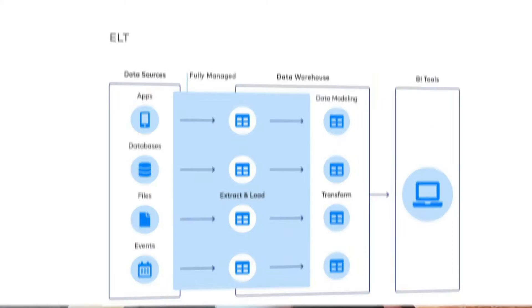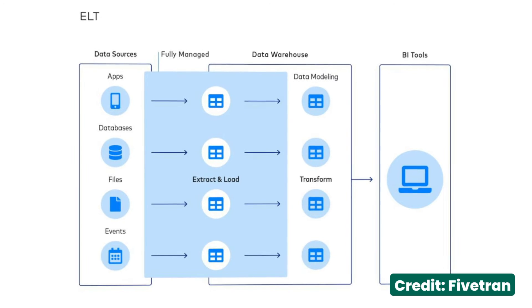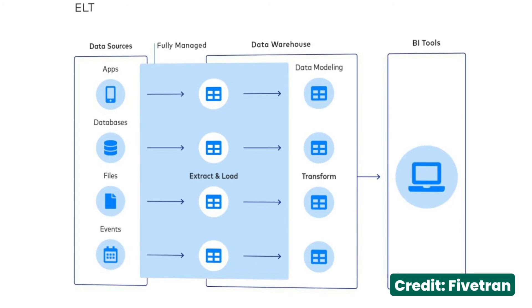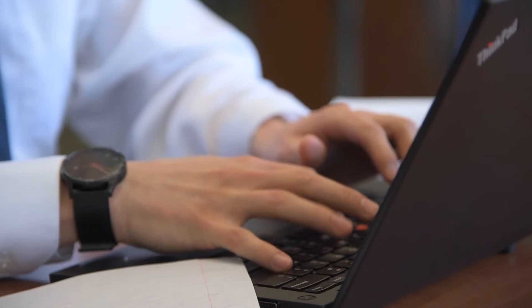With traditional ETL, you're writing to a consistent system — like a data warehouse — that was built to ingest large amounts of data, and you own the structure. You can dump data into Snowflake in any structure and then transform, analyze, and process it however you want. With reverse ETL, you need to be very careful about how you're putting data into each system — not just per system, but per use case and per customer.